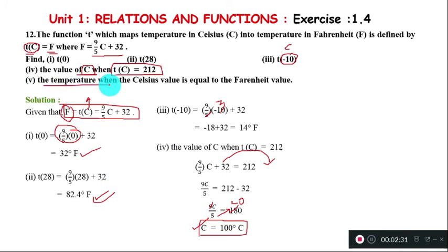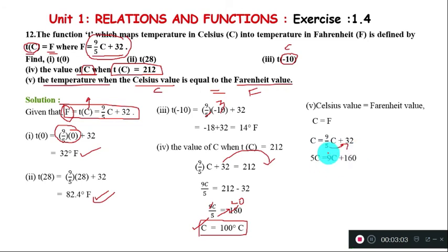Part (v): Find the temperature when the Celsius value equals the Fahrenheit value. The question asks when C = F. Setting C equal to the Fahrenheit formula: C = 9/5 C + 32.